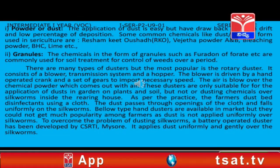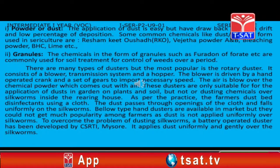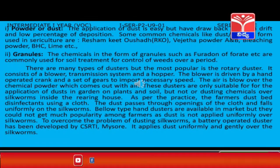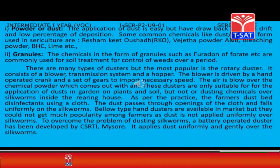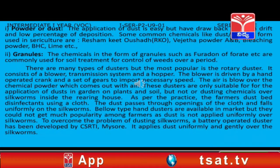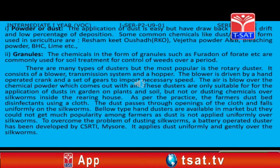Powder or dust: The application of dust is easy but has drawbacks like high drift and low percentage of deposition. Some common chemicals in dust form used in sericulture are Resham Key, Taushal, RKO, Vegeta powders A and B, bleaching powder, BHC, lime, etc.